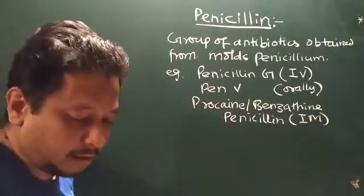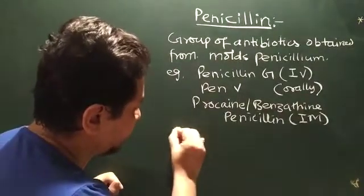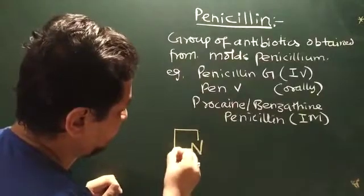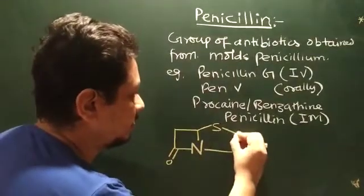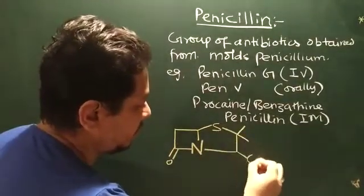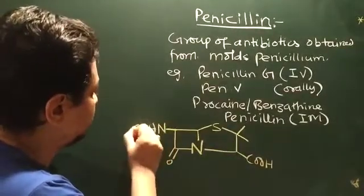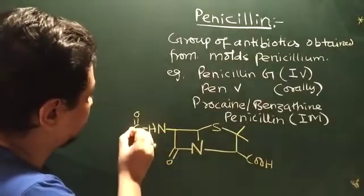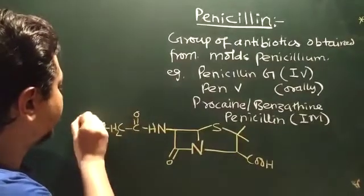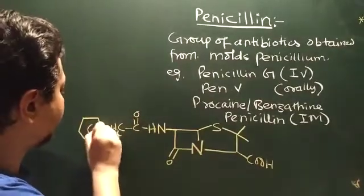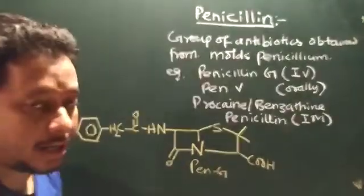Now, the penicillin G structure, if you see, this contains a beta-lactam, then you have thiazolidine ring, then 2-methyl carboxylic acid, then you have an NH, then CO, then you have alpha CH2, and then you have the phenyl structure. This is the structure of your penicillin G. This is natural penicillin.